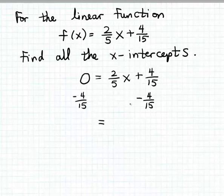by subtracting 4/15 first from both sides of the equation. So that's one way you can proceed. And if I do that, then I'll get 2/5x = -4/15.